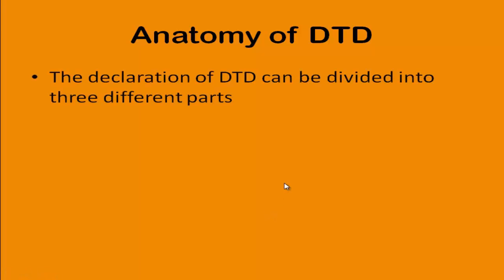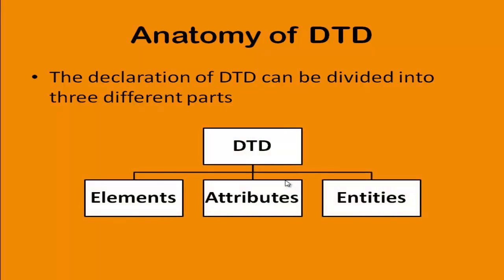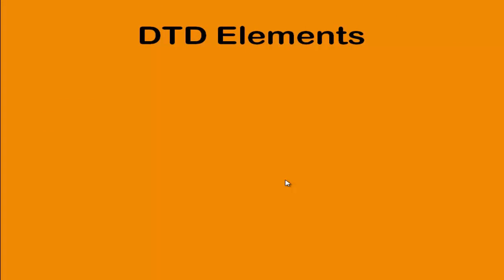Welcome. Now we are going to see about the anatomy of DTD. I'm going to divide my DTD declaration into three different sections: elements, attributes, and entities. We are going to see these in depth in our upcoming slides. To start with, DTD elements.